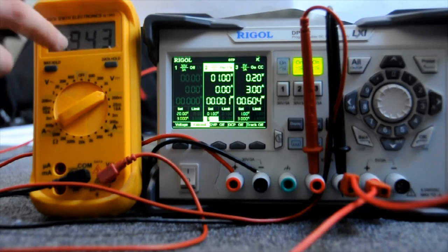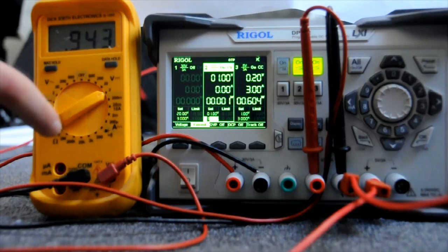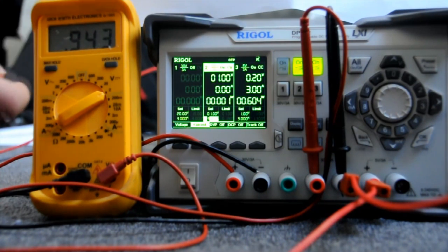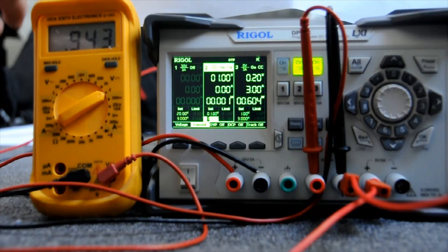Way off 1 volt and that is way outside the spec. This value should be correct to plus or minus 10 millivolts plus 0.05%. So it should be at least 0.985. But instead it's 0.943. That is 57 millivolts off.